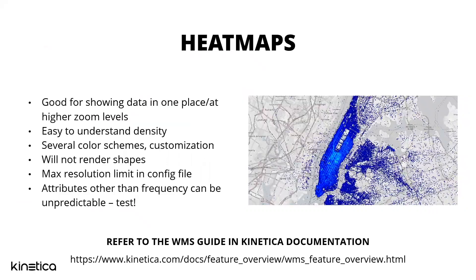Heat maps are useful for looking at a ton of data at higher zoom levels — you can instantly ascertain the density of the data and where most of it is. There are a ton of color schemes you can play around with to customize the look. Heat maps will not render shapes; if you're trying to generate a heat map out of a polygon, that's not going to work — you'll want to use the feature renderer for that.